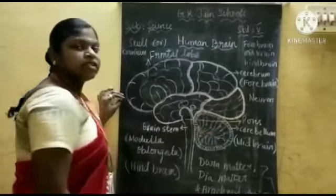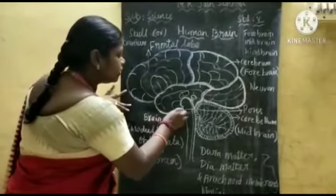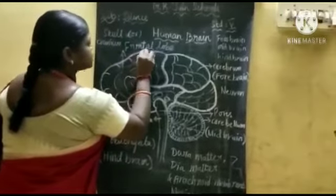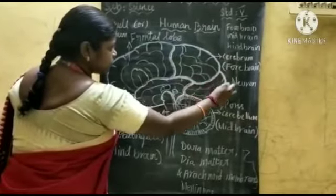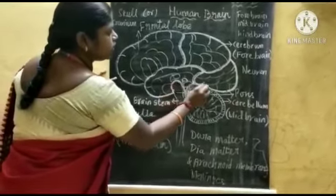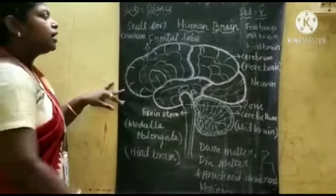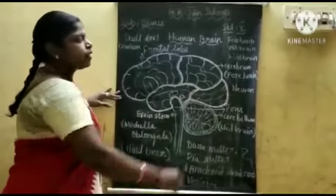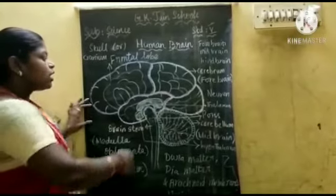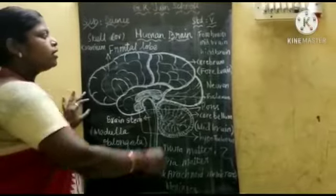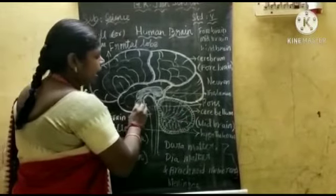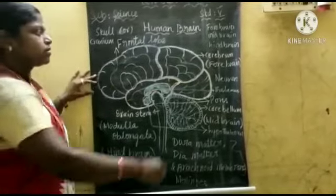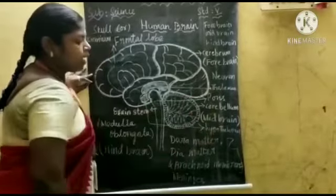Now we are going to see about the cerebrum. This is the major part of the brain. I will show you the picture here. Can you see here? Four lobes are there — I will explain them later. This is the cerebrum; it is the big part of the brain situated in the front, so it is also called as forebrain. Forebrain consists of 3 parts: cerebrum, thalamus, and hypothalamus.